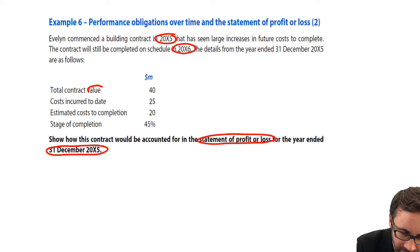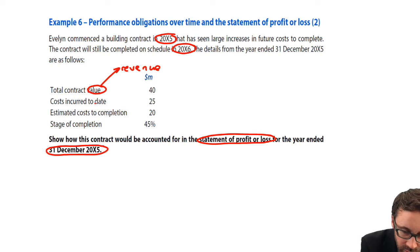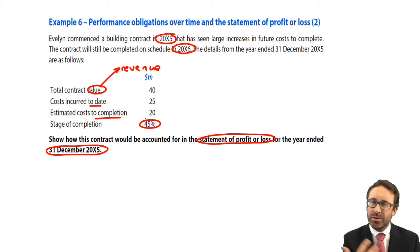The information that we've got is as follows. We're told the total contract value, which effectively is the total revenue. We've then got our costs to date, our costs of completion, and then the percentage completion. We've been given that within the question.